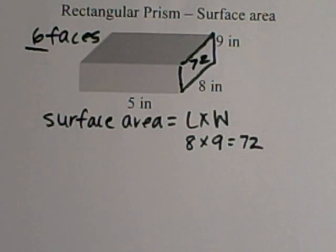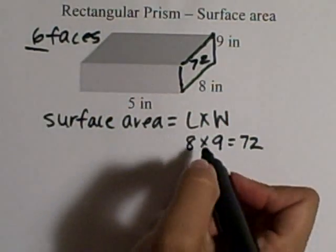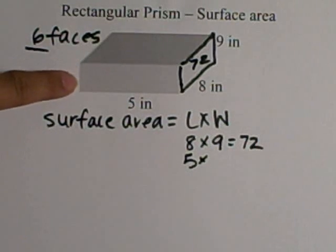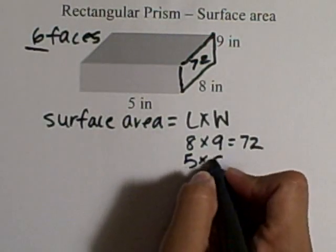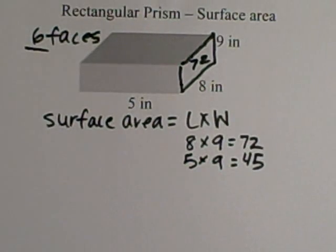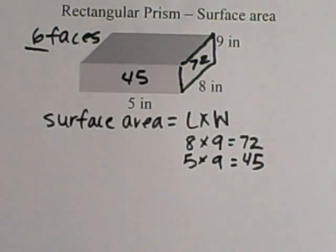Next, we're going to solve for this front face. The front face, the length is 5. We're going to times that by the width. But if you can see here, I don't have a measurement. But if I keep looking over, I can see that it lines up with 9. So I'm going to do 5 times 9, which is 45. Now I know that this face is 45.